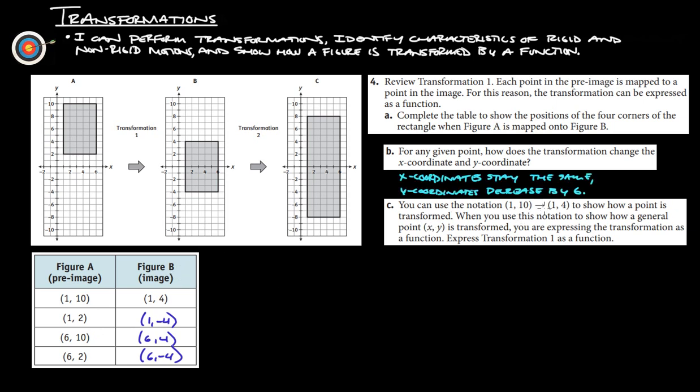So, we can use the notation, one, ten, transforms to one, four, to show how a point is transformed. When you use this notation to show how a general point, (x, y), is transformed, you're expressing the transformation as a function. Express transformation one as a function. So, basically, they're asking, what do we do to this to get to this? So, we would express that. We always start with our x and our y. And then, to transform that, we turn that into, the x stays the same. So, we just write x again, because the x stays. And then, the y is subtracted by six each time to get to the new point. So, this would be the pre-image, and this here is the image. And that's our transformation as a function.